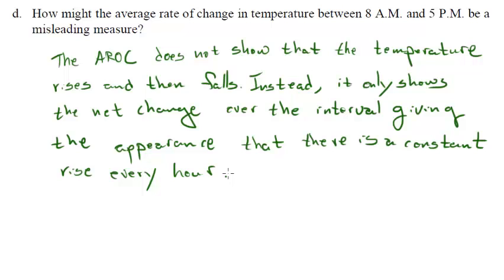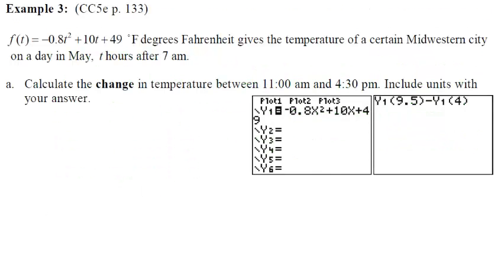Instead, the average rate of change shows only the net change over the interval, giving the appearance that there was a constant rise every hour, when actually the temperature went up for a while and then decreased. Now we want to find changes from an algebraic representation, where a calculator will help.